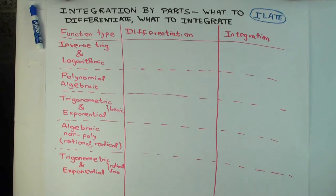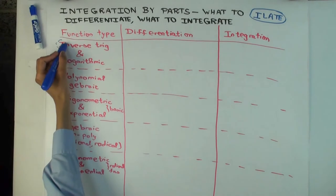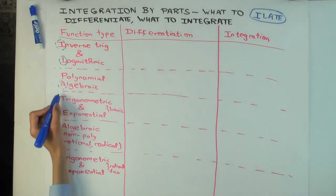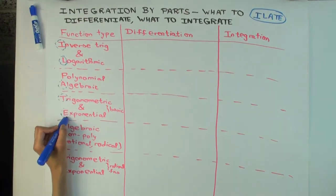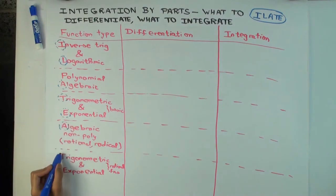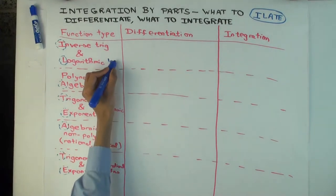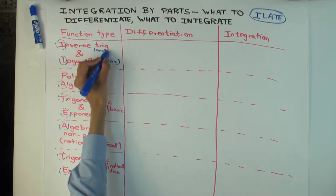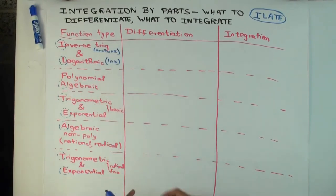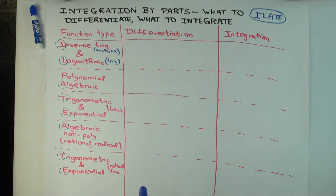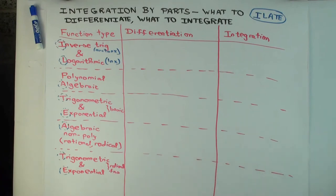The beginning letters here are relevant for the mnemonic. Inverse trig and logarithmic functions — some examples: logarithmic would be ln(x), and inverse trig could be something like arctan(x). Now, what happens when you differentiate functions like these? The derivative of ln(x) is 1/x, and the derivative of arctan(x) is 1/(1 + x²). What's common between these derivatives? They're algebraic things. So in general, if you differentiate something which is inverse trig or log, you get algebraic expressions.